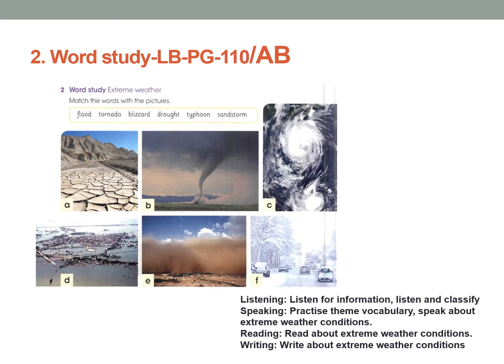Now let's get back to learner's book page number 110. Activity 2: Word Study. Match the words with the pictures. You have pictures A, B, C, D, E, F and the words in the box: flood, tornado, blizzard, drought, typhoon, sandstorm. Which picture do you think is a flood — picture A, B, C, or D? It is D. That's right. Write down the answers and once you finish, check the answers in the next slide. Try to do it by yourself first, then go to the next slide to check.